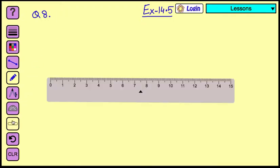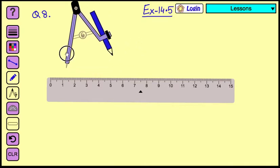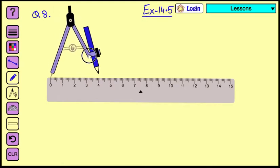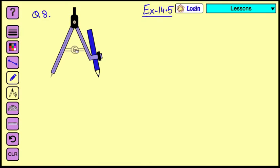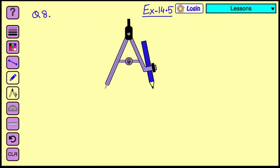First we will take a ruler and a compass. Place the needle of the compass at zero. Once you have placed here, now measure it. Just drag the pencil and measure accurately 4. Place it on 4. Now once you have done it, remove the ruler, you can lock the compass and draw the circle.